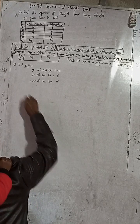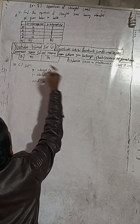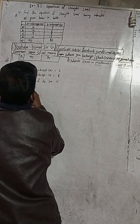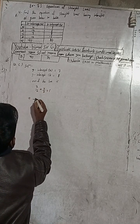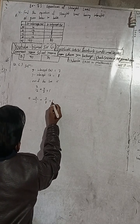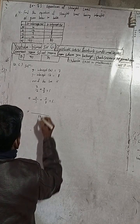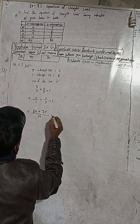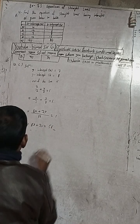Now part C. For part C, x-intercept A is 7 and y-intercept B is 8. Therefore, the equation of the line is x/a + y/b = 1, giving x/7 + y/8 = 1. Multiplying through by the LCM of 7 and 8, which is 56: 8x + 7y = 56. This is the required equation for part C.